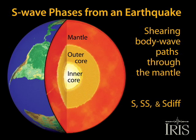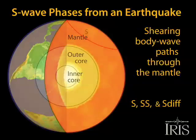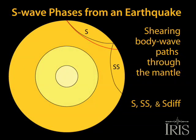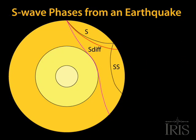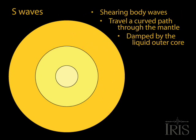This animation addresses three common variations of S-type seismic body waves. All are shearing waves that travel through the mantle in all directions away from the epicenter of an earthquake. We won't address shear waves that change behavior as they pass the core mantle boundary in this animation.